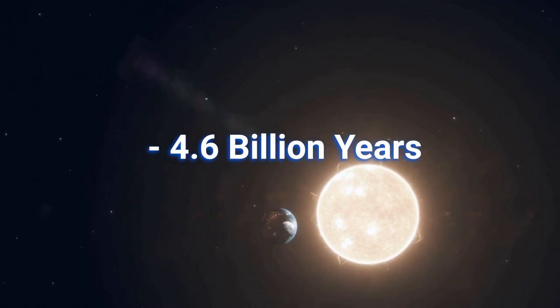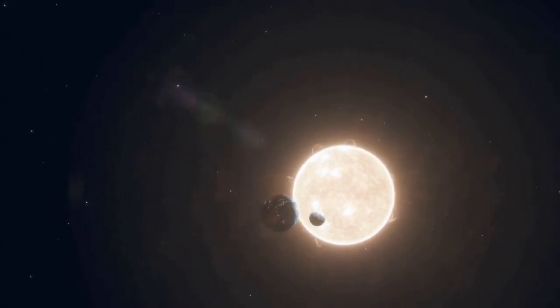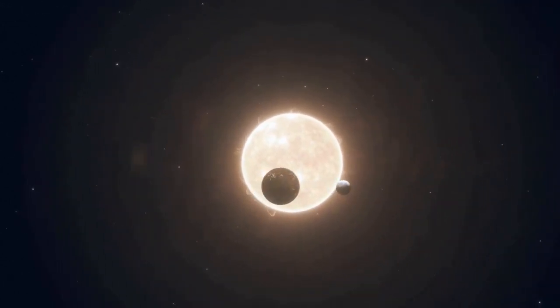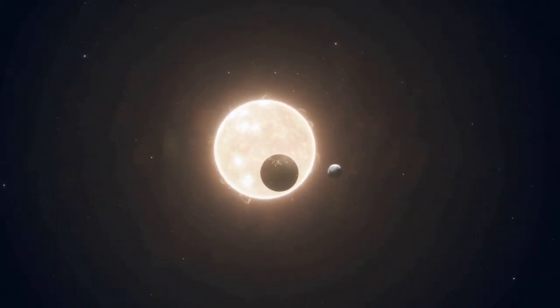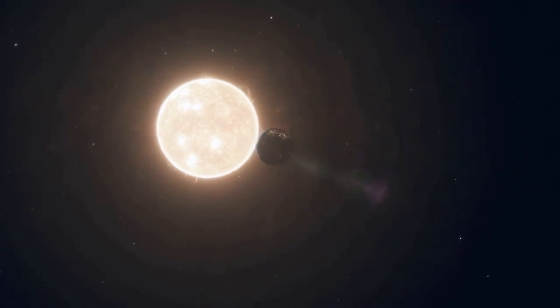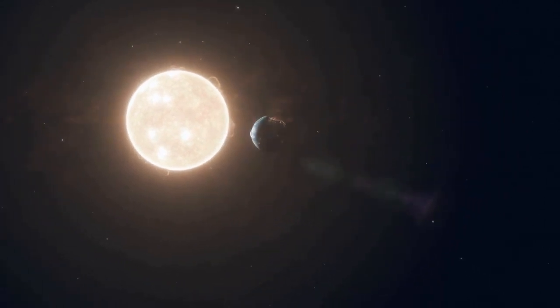4.6 billion years ago, the solar system is formed, including Earth. This begins with the collapse of a molecular cloud.